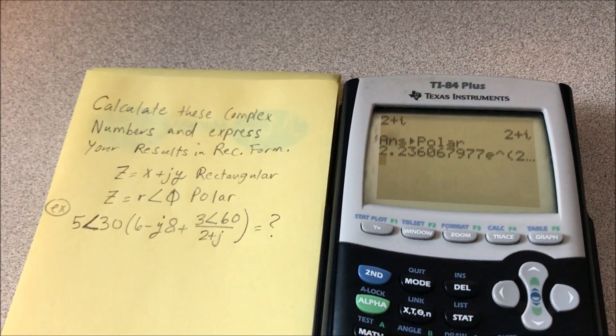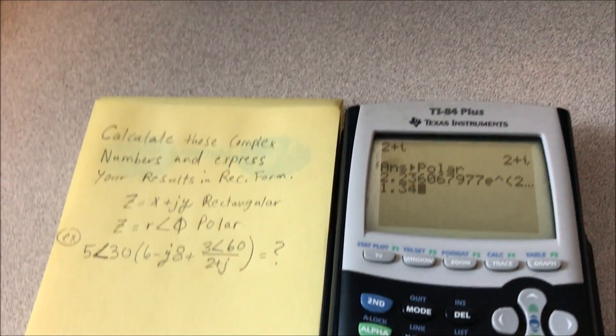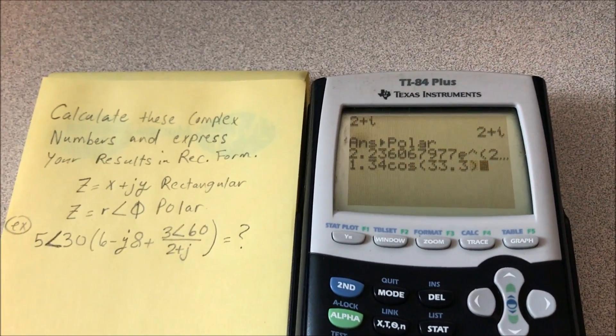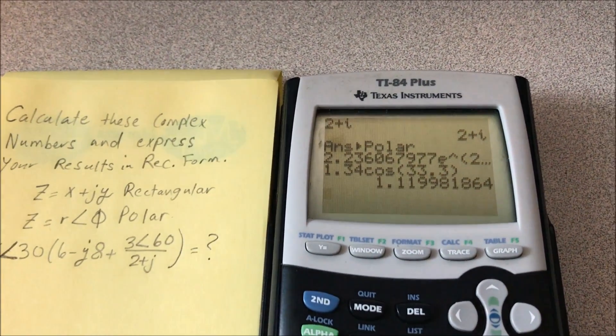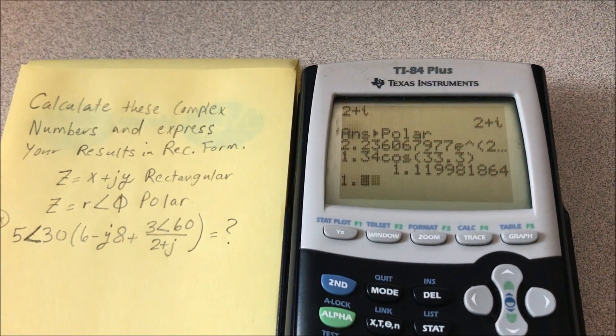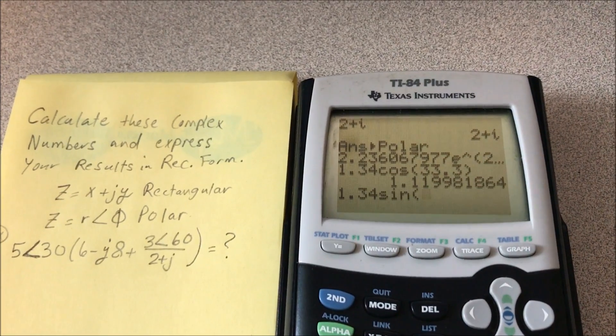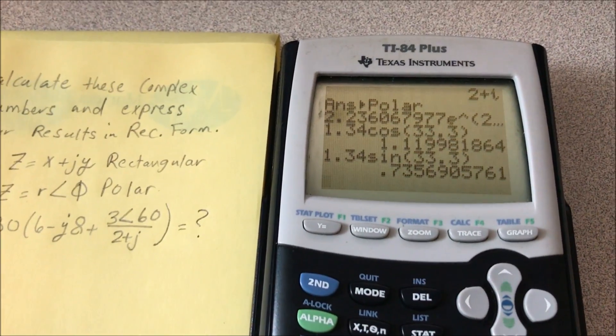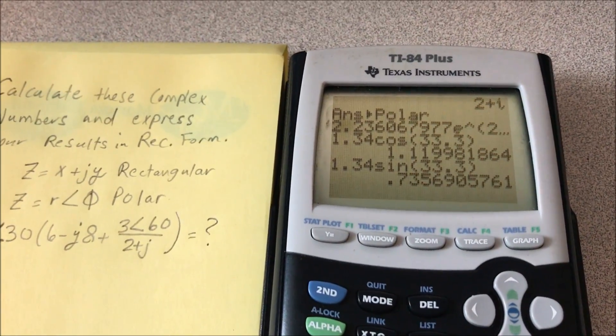1.34 cosine 33.3 gets you 1.12, and then 1.34 sine 33.3 gets you 0.74.